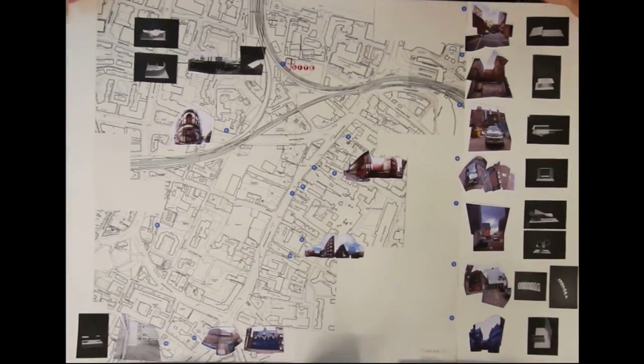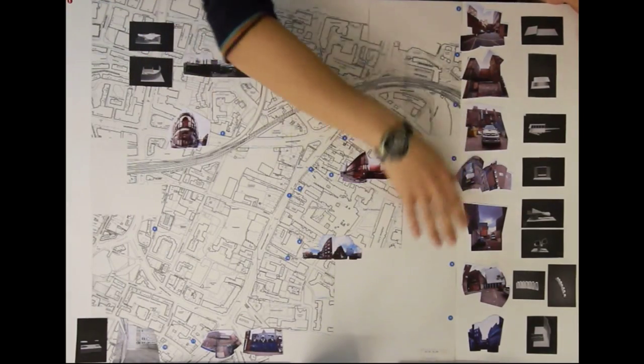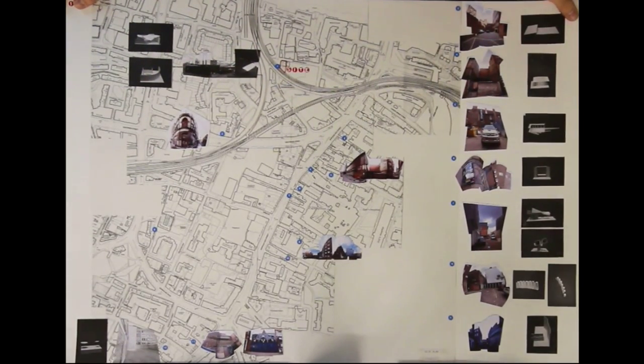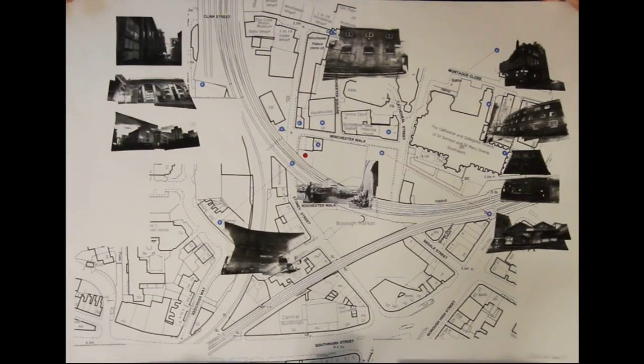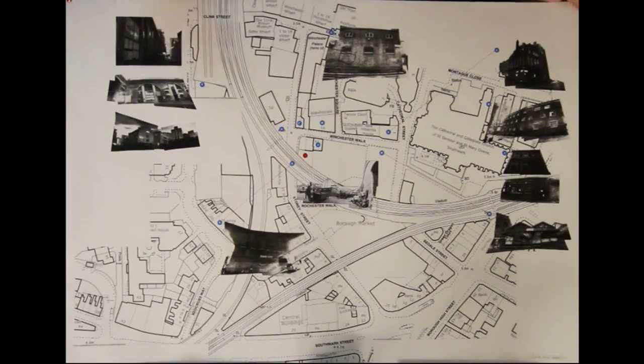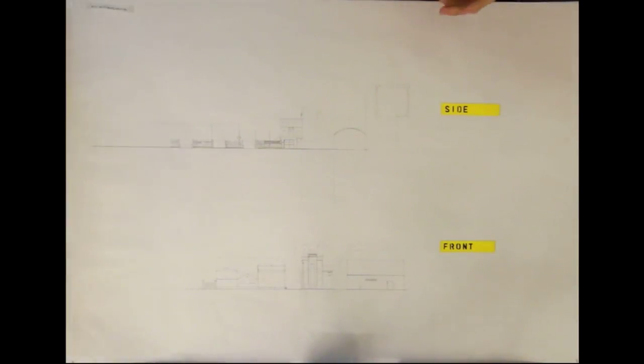The first page is the general site plan. We were asked to choose 12 sites and make 12 models to develop some ideas. My site is at the Borough Market and is right next to the railway. These are views from the site. This is a site elevation and site section.